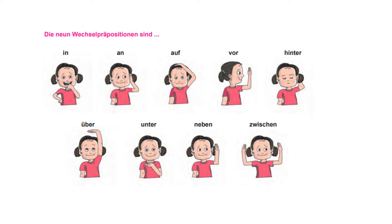In the previous slide, I gave you the nine Wechselpräpositionen. The nine Wechselpräpositionen sind: in (that is 'in' in English). Then we have an and auf — both mean 'on' in English. But 'an' is used for a vertical surface, and 'auf' is used when you put something horizontally. So an and auf both have the meaning 'on' in English, but an is used for putting something vertically and auf is used for putting something horizontally.